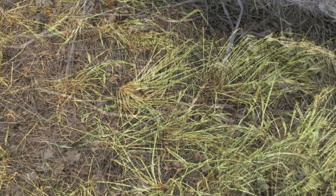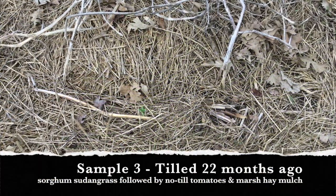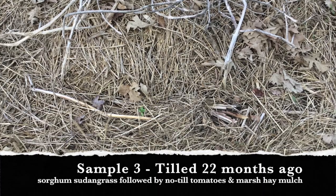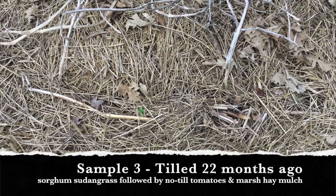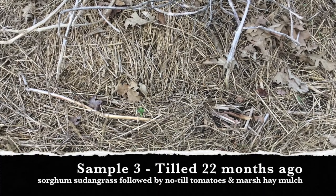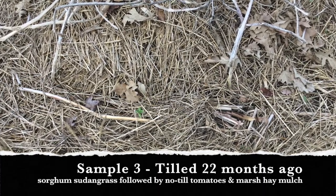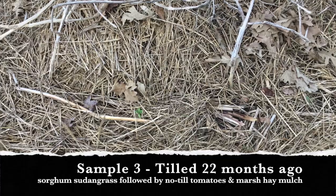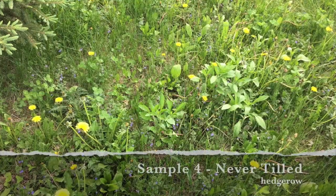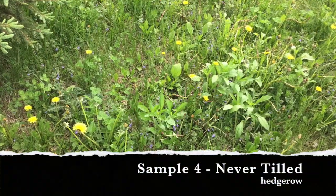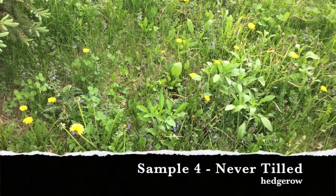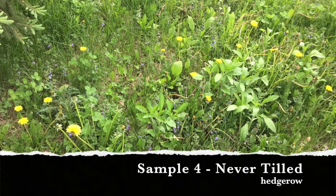The third sample was last tilled 22 months ago when it was seeded to sorghum sudan grass. Tomatoes were planted into the winter-killed residue the following season and mulched with marsh hay. The fourth sample is from the field edge and has never been tilled.